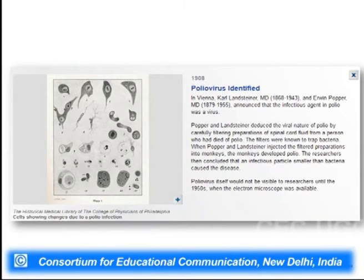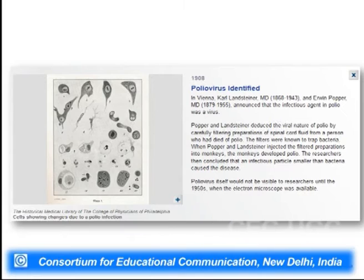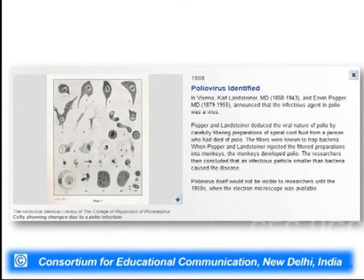The polio virus was first identified in 1908 by scientists Karl Landsteiner and Erwin Popper, who announced that the infectious agent in polio was a virus. They deduced the viral nature of polio by filtering spinal cord fluid from a person who died from polio. Since the filters trapped bacteria, when Popper and Landsteiner injected this filtered preparation into a monkey model system, the monkey developed polio — confirming that the infectious particle was smaller than bacteria and caused the disease.